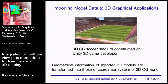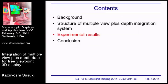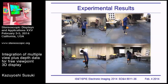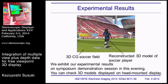Geometrical information of imported 3D models is transformed into the coordinate system of the 3D CG world. As shown in the previous section, these three images show point cloud data, reconstructed model without texture, and reconstructed model with texture. As another example, this is a scene of a young man lifting a soccer ball. From these images and corresponding depth maps, the object is reconstructed, and the resulting image shows the combination of the 3D CG soccer field and the reconstructed 3D model of the soccer player.